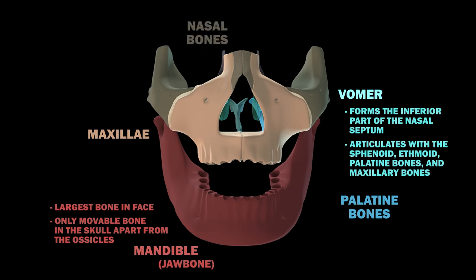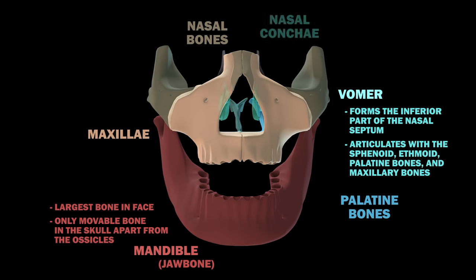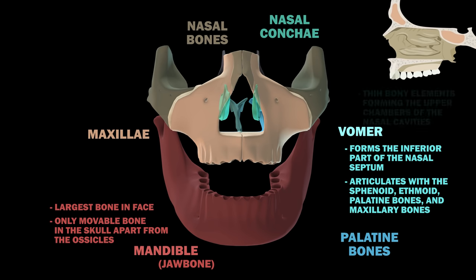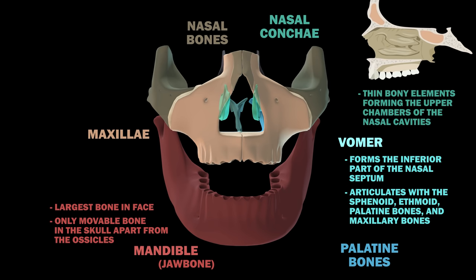The pair of nasal bones form the bridge of the nose and are joined at the internasal suture. The nasal conchi are thin bony elements forming the upper chambers of the nasal cavities. They are composed of three pairs: the inferior, middle, and superior conchi.